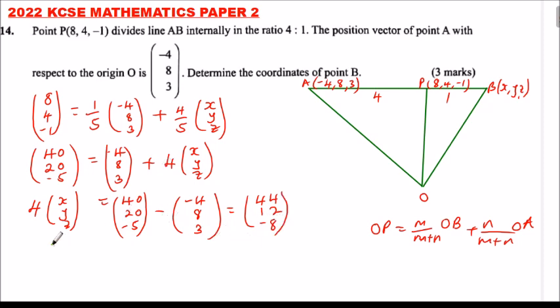So, we divide by 4. So, here we will be left (X, Y, Z) is equals to 1 over 4 of (44, 12, -8). So, when you open the bracket a quarter of 44 is 11, a quarter of 12 is 3, and a quarter of minus 8 is minus 2.